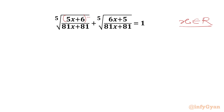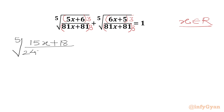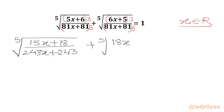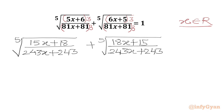We start by multiplying 3 in the numerator and denominator. We will write times 3 in the denominator also. Here we will multiply with 3 in the denominator as well. Now we have to expand and simplify, and we will get the fifth root of 5 times 3 is 15. So 15x plus 6 times 3 is 18 over 81 times 3 is 243. That gives us: x plus 243 plus fifth root of 18x plus 15 over 243x plus 243, equal to 1.